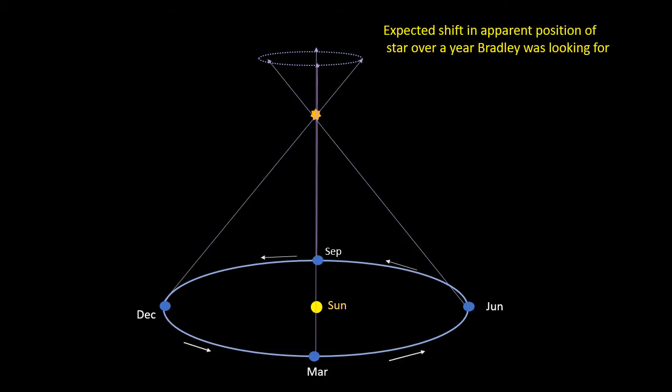Over the course of a year, the star Eltanin should trace out a small circle centered on its mean position. In this diagram, the position shift is greatly exaggerated, of course. The position shift Bradley was looking for was very small, which is why it hadn't been detected before.